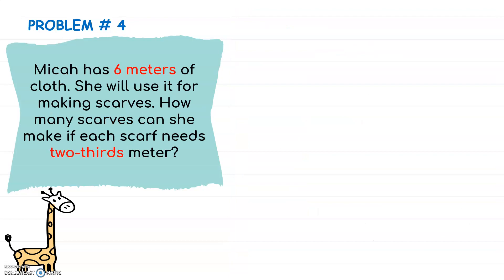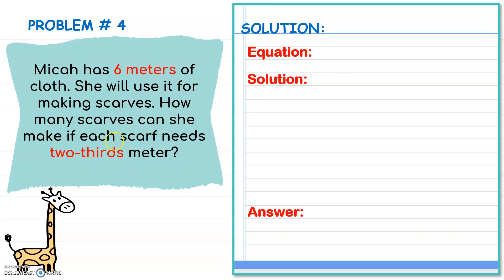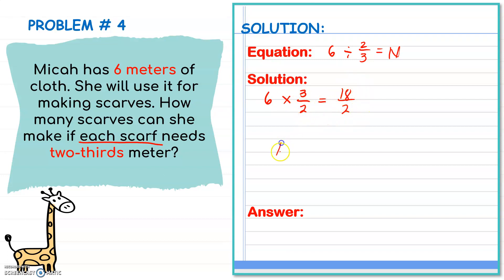Next problem: Mika has 6 meters of cloth. She will use it for making scarves. How many scarves can she make if each scarf needs two-thirds meter? We need to find how many two-thirds are there in 6 meters. Our equation is 6 divided by two-thirds. We multiply the dividend by the reciprocal, which is three-halves. 6 times 3 is 18, and we copy denominator 2. 18 over 2 simplifies: 18 divided by 2 is 9.